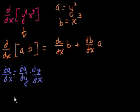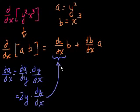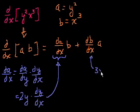Since a equals y squared, the derivative of a with respect to y is 2y. We haven't explicitly defined y in terms of x, so we leave the derivative of y with respect to x as dy/dx. So the derivative of a with respect to x is 2y times dy/dx. For b equals x to the third, since it's explicitly defined in terms of x, the derivative of b with respect to x is simply 3x squared.